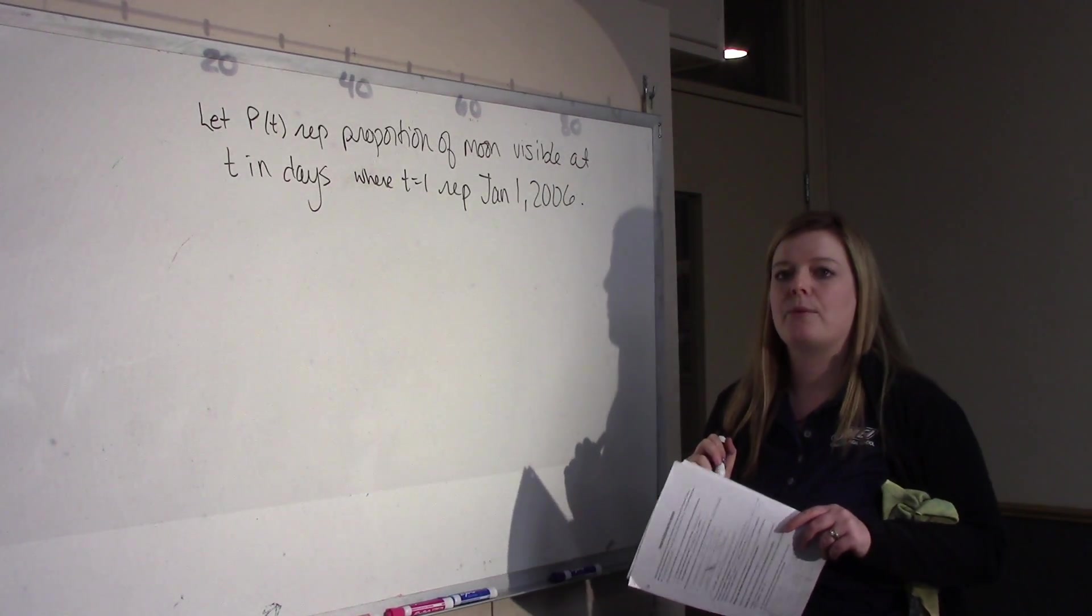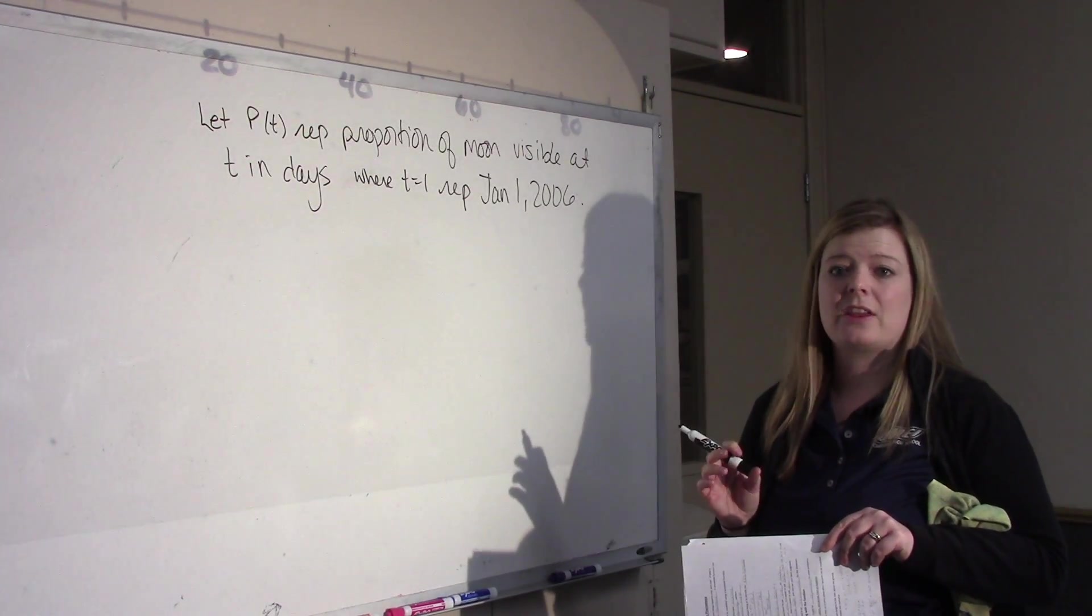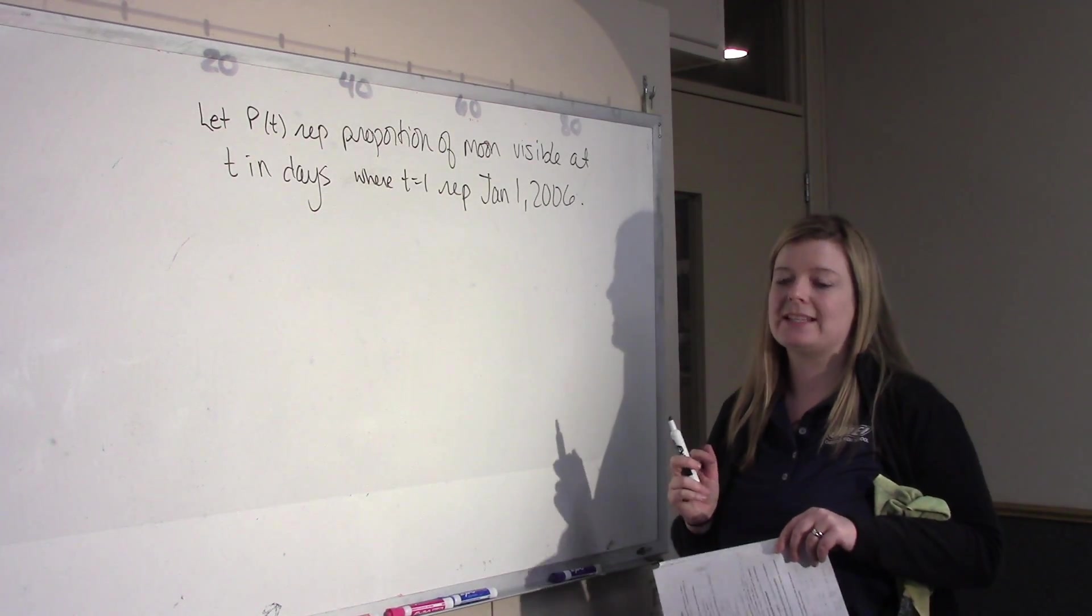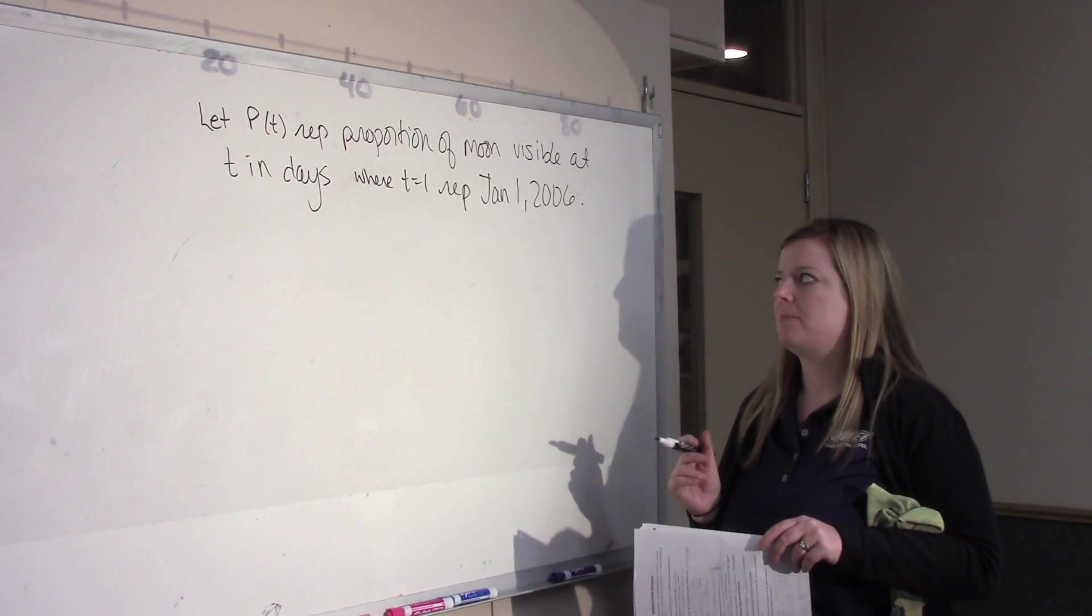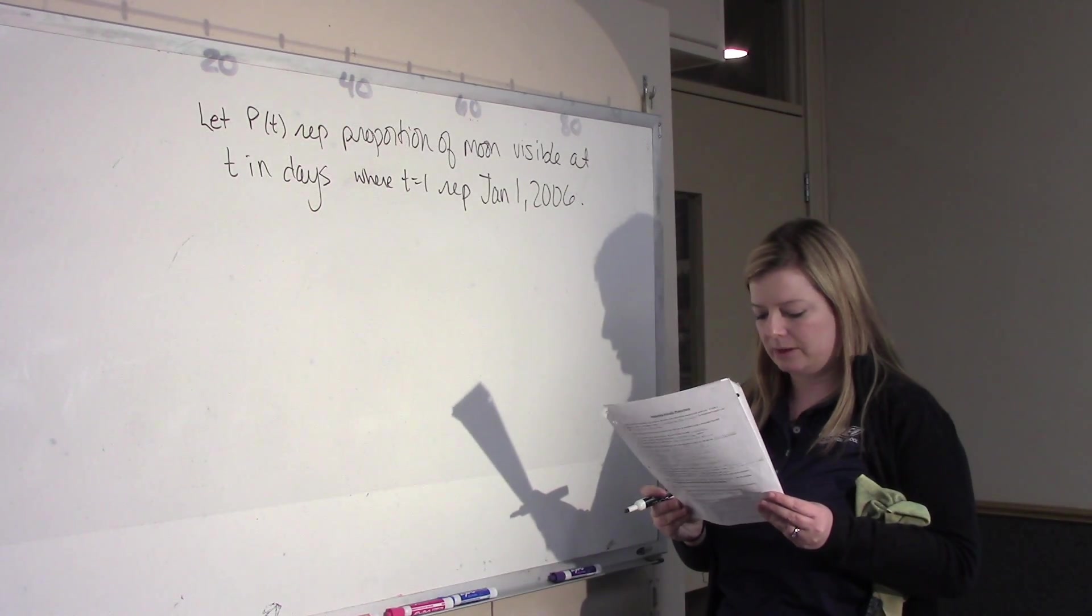So this allows me to, okay, where was the moon visible on like February 27, 2010? I should be able to figure out then based on how many days have happened, what my T value should be. So, you have to include this last bit of information.